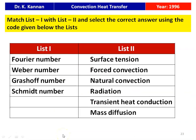Match list 1 and list 2: Fourier number, Weber number, Grashof number, Schimmelit number — with surface tension, forced convection, natural convection, radiation, transient heat conduction, and mass diffusion. Fourier number is connected with transient heat conduction, Weber number with surface tension, Grashof number with natural convection, and Schimmelit number with mass diffusion.